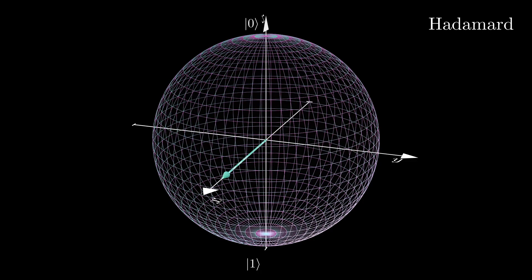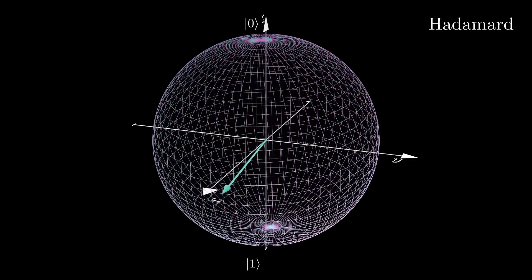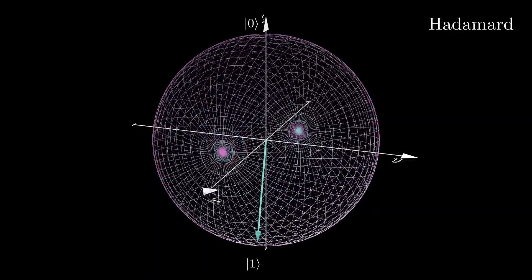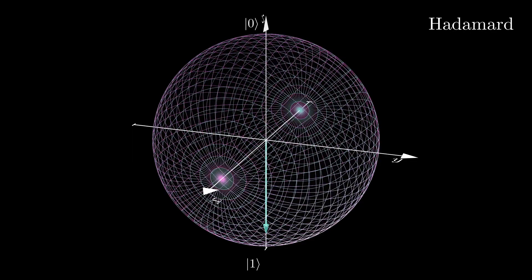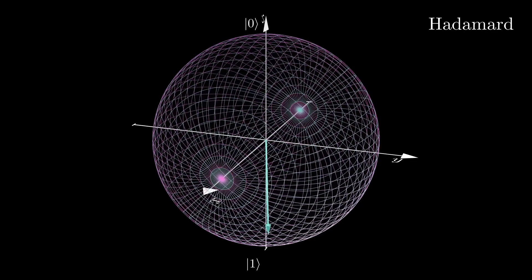If we place an arbitrary state vector on the sphere, we can understand the Hadamard gate as first rotating by the y-axis by 90 degrees. This can then be followed by a 180 degree rotation about the x-axis.